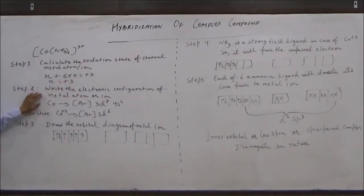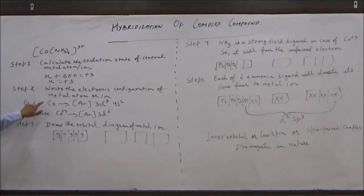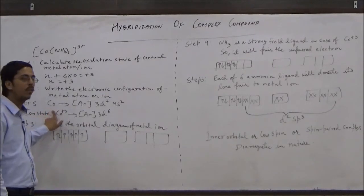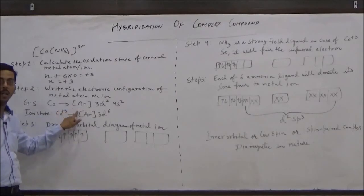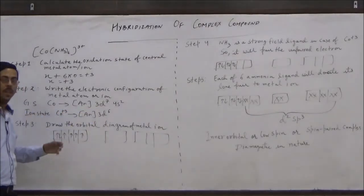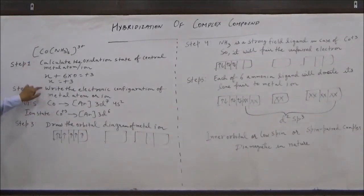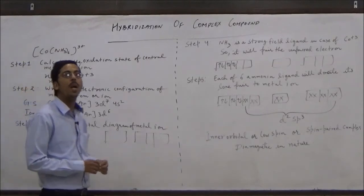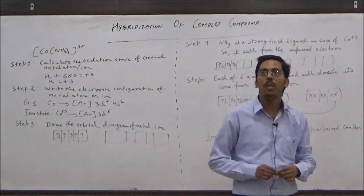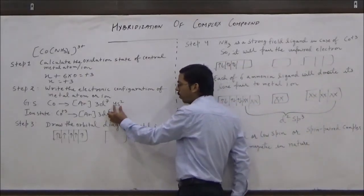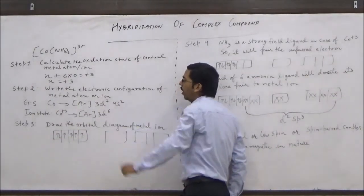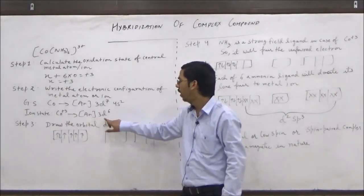In step 2, we will write the electronic configuration of the metal atom or ion. First, we write the ground state electronic configuration of cobalt metal atom, which is [Ar] 3d⁷ 4s². Then, we write the electronic configuration of cobalt in +3 oxidation state. To get Co³⁺, we remove 3 electrons from its outermost shell — 2 electrons from the 4s orbital and 1 electron from the 3d orbital. So the new electronic configuration is [Ar] 3d⁶.